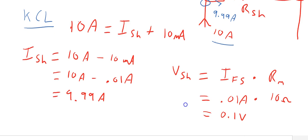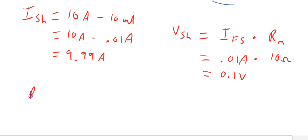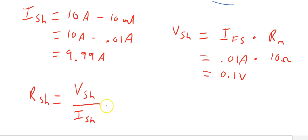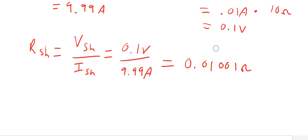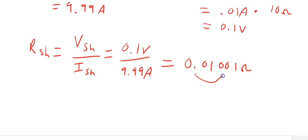Using those two values, Ohm's law tells us the shunt resistance equals the voltage across the shunt divided by the current through the shunt: 0.1 volts divided by 9.99 amps. That gives us a resistance of 0.01001 ohms, or moving the decimal point three places, 10.01 milliohms as the required shunt resistance.